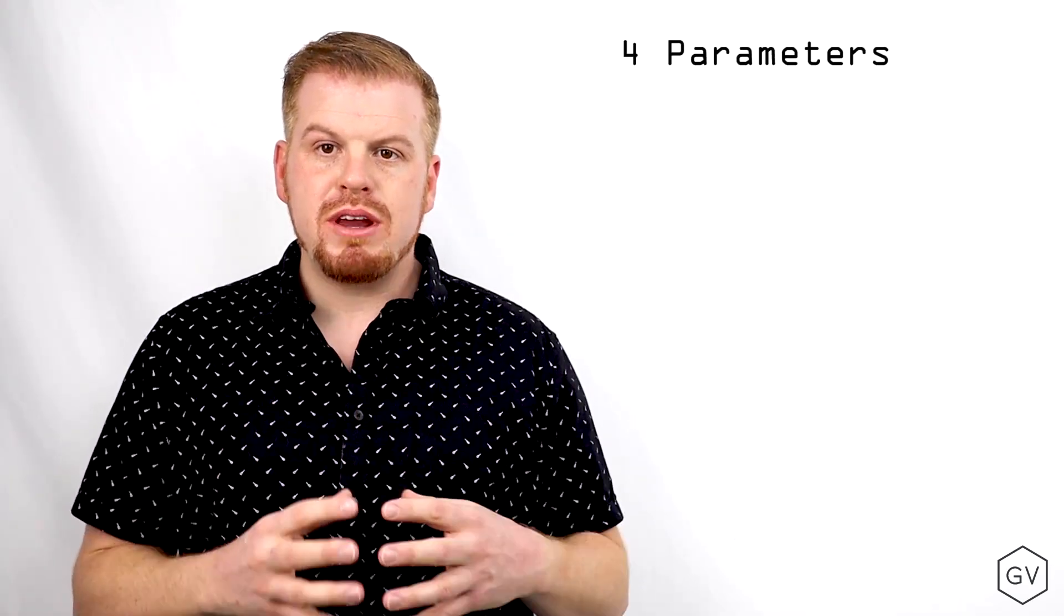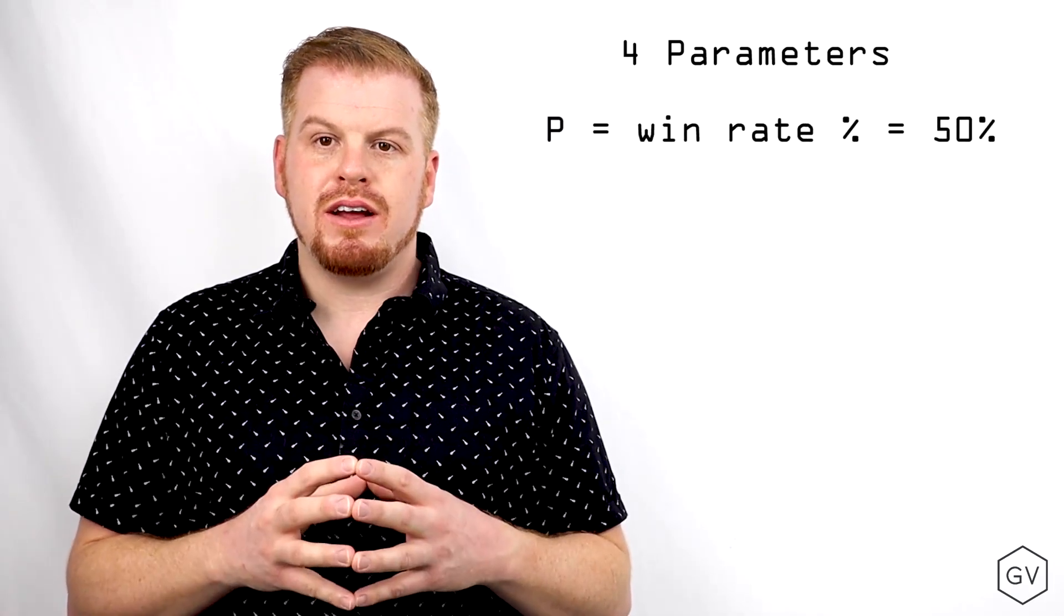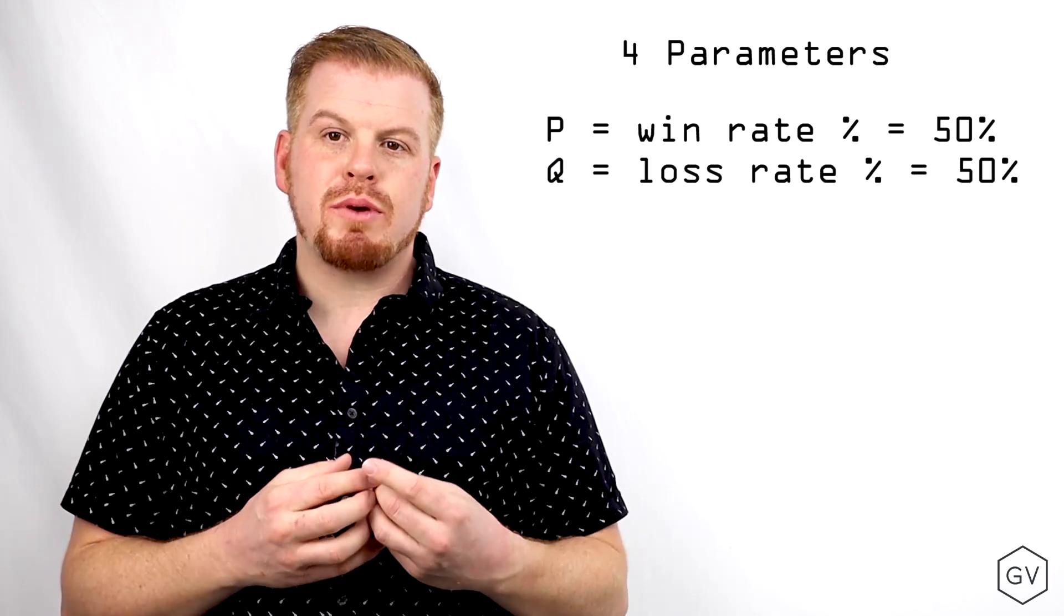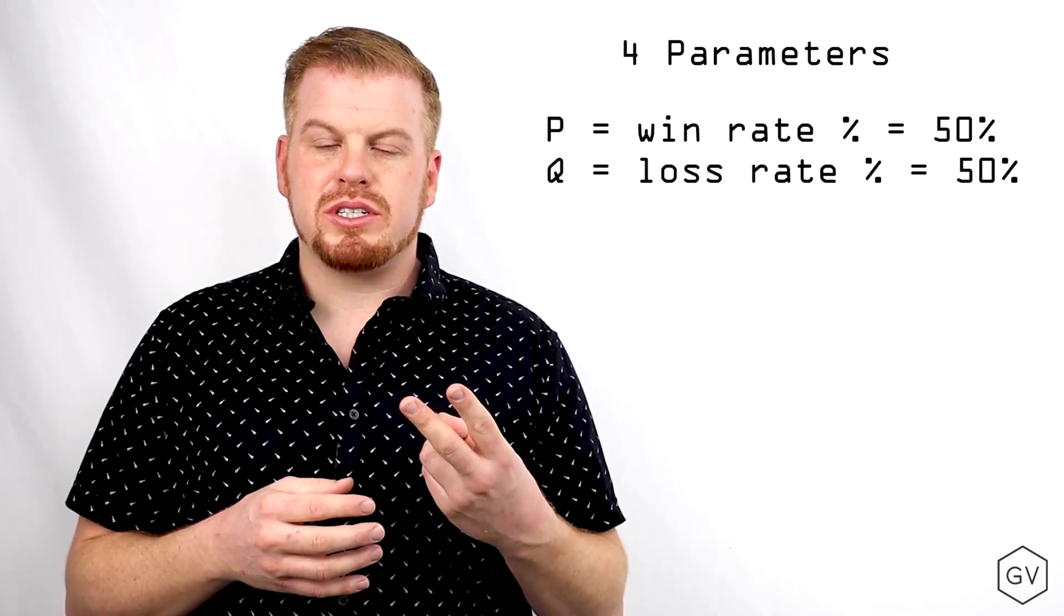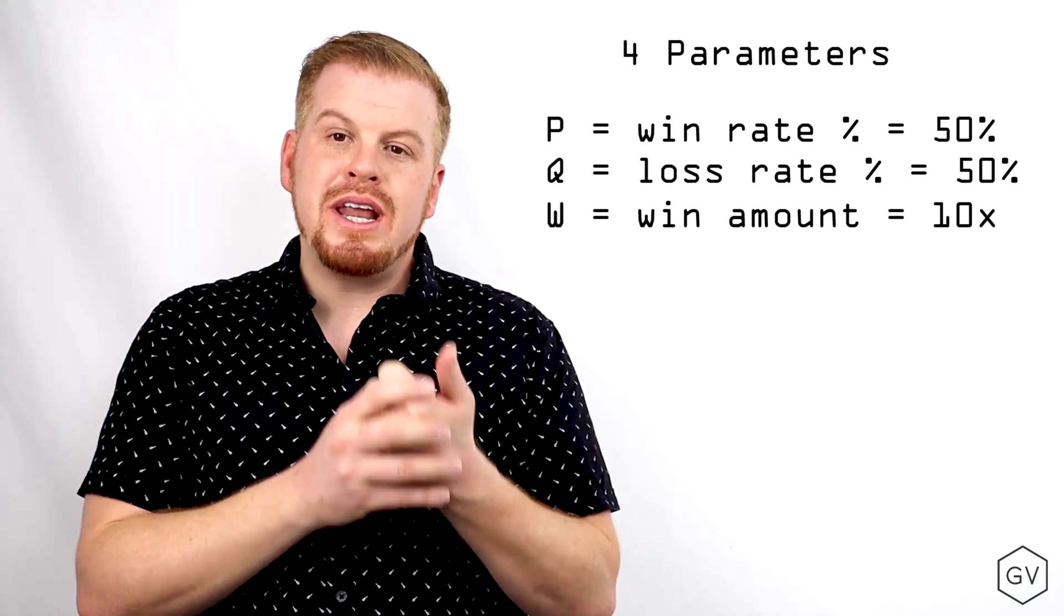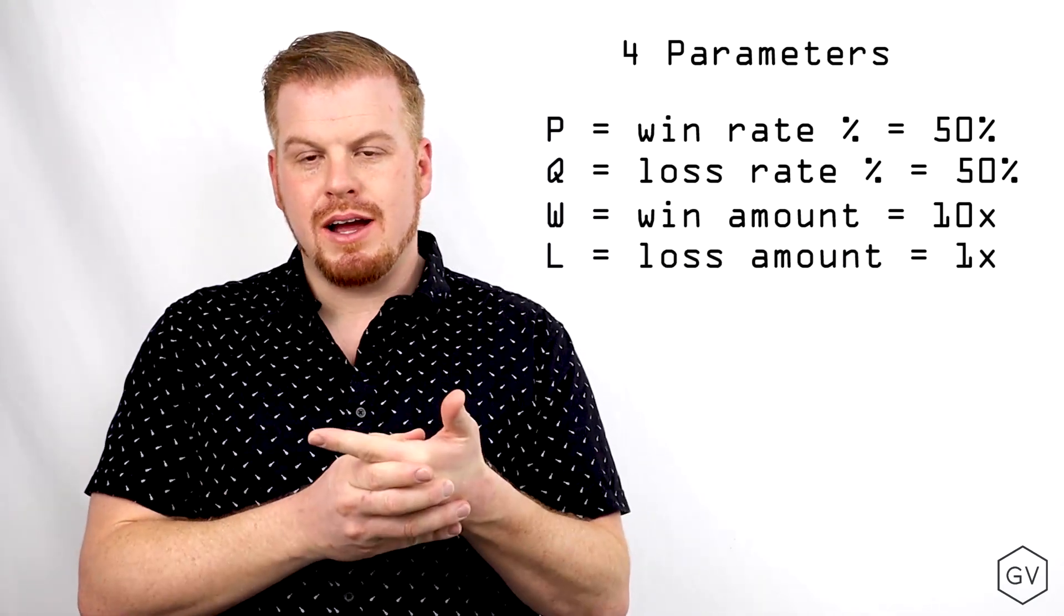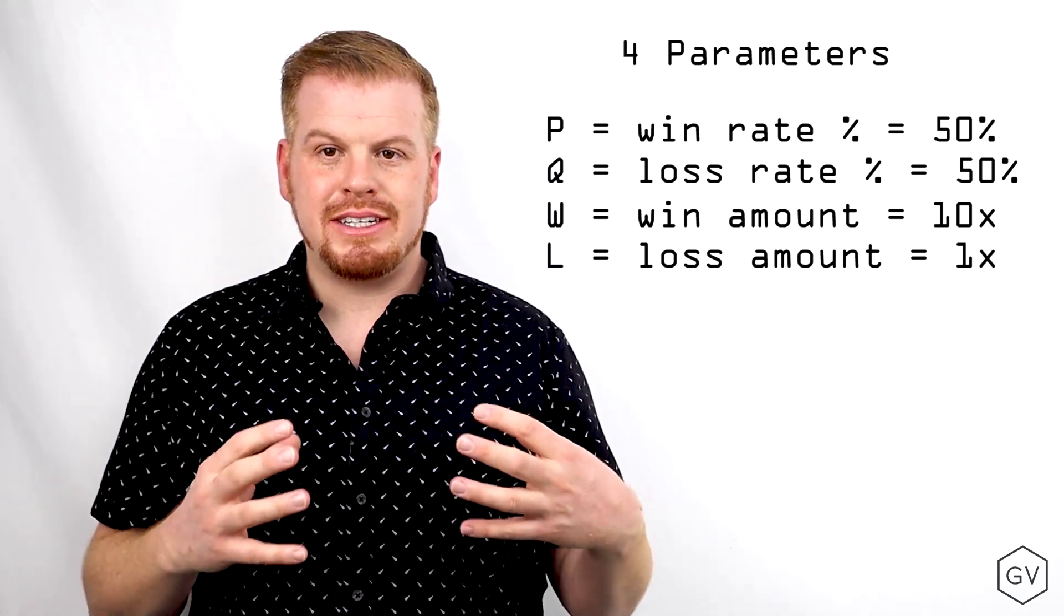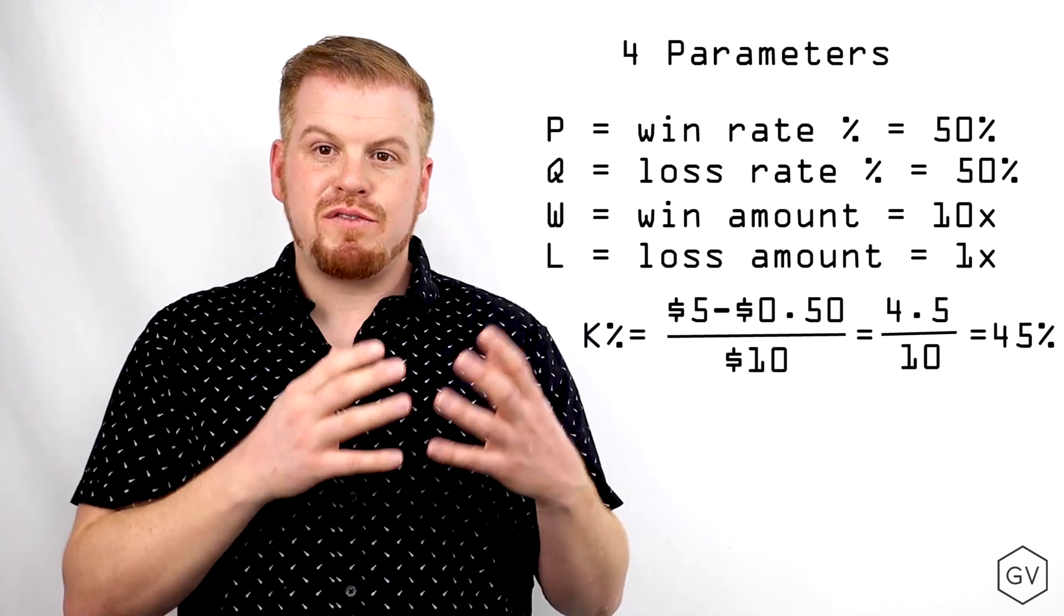Assuming that we know four important parameters, we can back out the Kelly criterion. So in our previous example, we know that the win rate of the coin flip game is 50%. We know that the loss rate of the coin flip game is 50%. We also know that the win amount is going to be 10 times, and the win loss is going to be one time. So given these four parameters, we can back out the Kelly criterion using this formula.